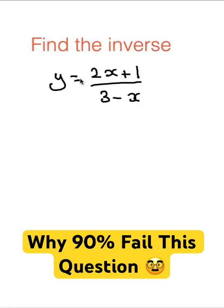Finally, the inverse. We change y to x and x to y. So we write this as x equals 2y plus 1 over 3 minus y.